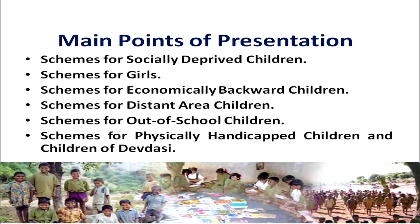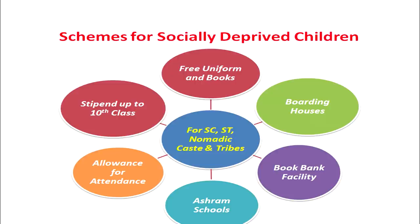In the last, the schemes for physically handicapped children and the children of Devdasi community will be discussed. So our main focus on today's presentation will remain on these points. First of all, the schemes for socially deprived children — these socially deprived children include scheduled caste children, children belonging to the scheduled tribes, children belonging to the backward classes or the tribal children. These constitute socially deprived children in the state of Maharashtra. For these SC, ST and nomadic castes and tribes, different schemes had been launched by the state of Maharashtra to achieve the target of universal elementary education.